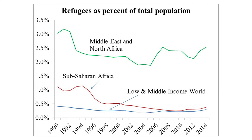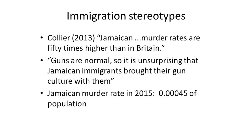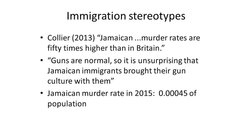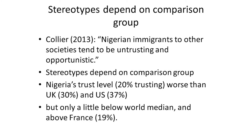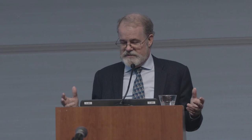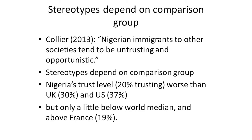How does this translate into immigration stereotypes? Paul Collier, after writing about Africa as being in the 14th century, helpfully wrote another book about immigration stereotypes, saying Jamaican murder rates are 50 times higher than in Britain's, and making the stereotypical generalization that guns are normal and Jamaican immigrants bring them. What is the actual murder rate in Jamaica? It's 0.00045 of the population. So the idea that most Jamaicans or most Jamaican immigrants are violent is just way out of touch with reality.